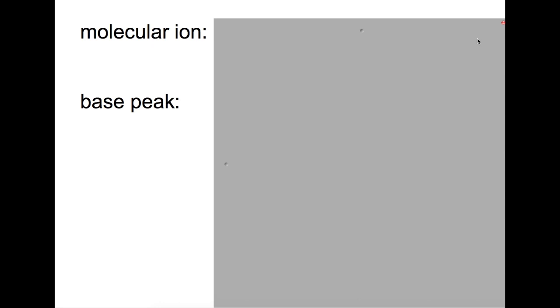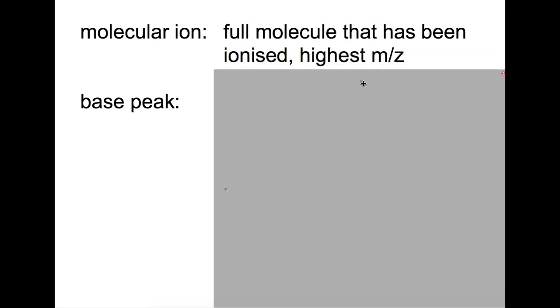The first specific peak that we look out for is the molecular ion. This is the full molecule that has been ionized and always has the highest mass charge ratio in the spectra. This is really useful as this can be taken as the gram formula mass. If you've used elemental analysis to calculate empirical formula, you can then work out what your actual formula is using the formula mass of your empirical formula in conjunction with your molecular ion. If they're the same, then your empirical formula will be the final formula, or it may be that your molecular ion is a multiple of your empirical formula.